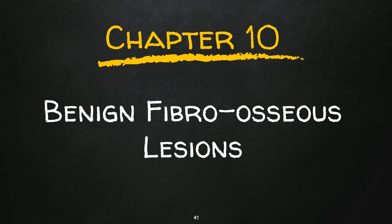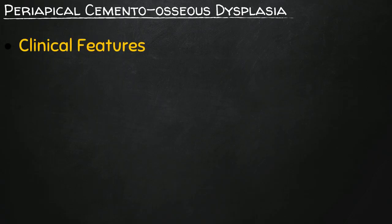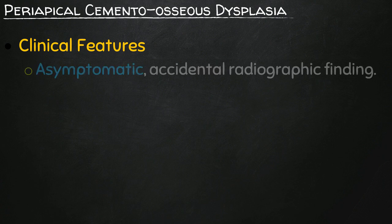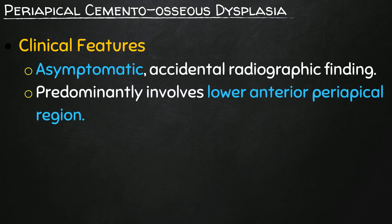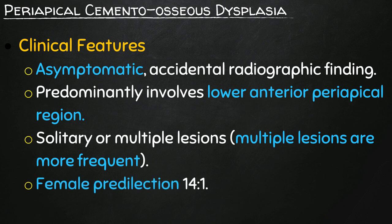Chapter 10: Benign fibroosseous lesions. Let's start with periapical cementoosseous dysplasia. The clinical features of this disorder: asymptomatic accidental radiographic finding, predominantly involves lower anterior periapical lesion, solitary or multiple lesions — multiple lesions are more frequent — and female predilection 14 to 1.